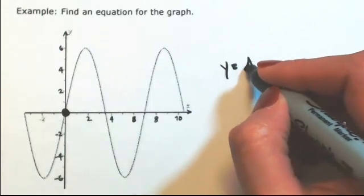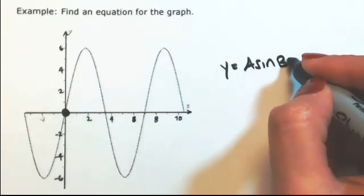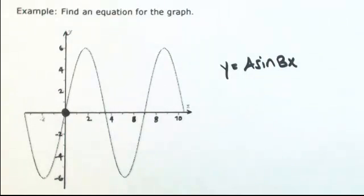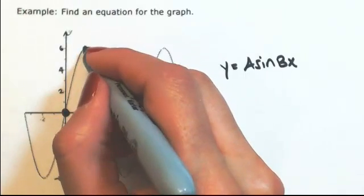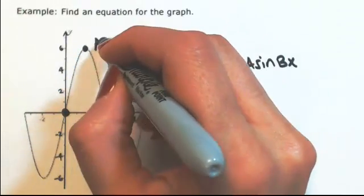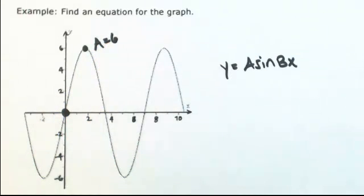So we have y equals a sine bx. The a is going to be determined by the amplitude. Looking at the highest spot on this curve, which is 6, this means that a is 6.